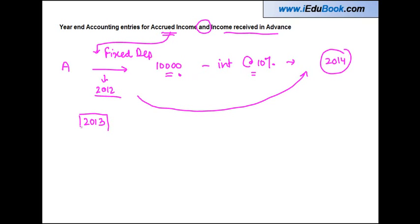Now let's say A is preparing his balance sheet in 2013. In this case, what happens is that even though A has not received the interest, if he is following the accrual basis of accounting, he has to show as an income whatever he has earned.